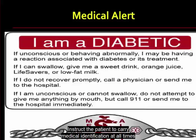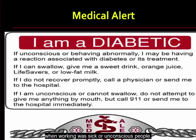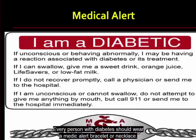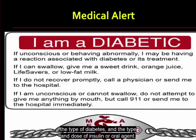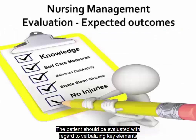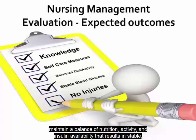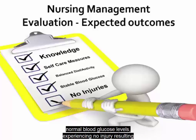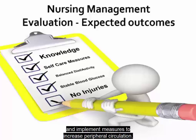Patients should carry medical identification at all times indicating they have diabetes. Every person with diabetes should wear a medical alert bracelet or necklace. The identification card should include the name of the healthcare provider, the type of diabetes, and the type and dose of insulin or oral agent. The patient should be evaluated on their ability to verbalize key elements of the therapeutic regimen, including knowledge of the disease and treatment plan. They should describe self-care measures that may prevent or decrease progression of chronic complications, maintain a balance of nutrition, activity, and insulin availability, and verbalize the effects of diabetes on peripheral artery circulation and implement measures to increase peripheral circulation.